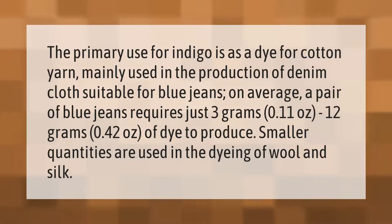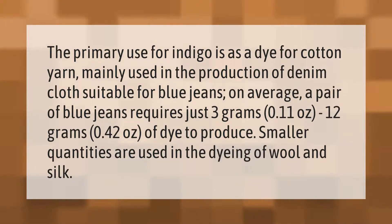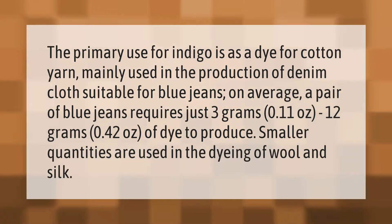The primary use for indigo is as a dye for cotton yarn, mainly used in the production of denim cloth suitable for blue jeans. On average, a pair of blue jeans requires just 3 grams (0.11 ounces) to 12 grams (0.42 ounces) of dye to produce.